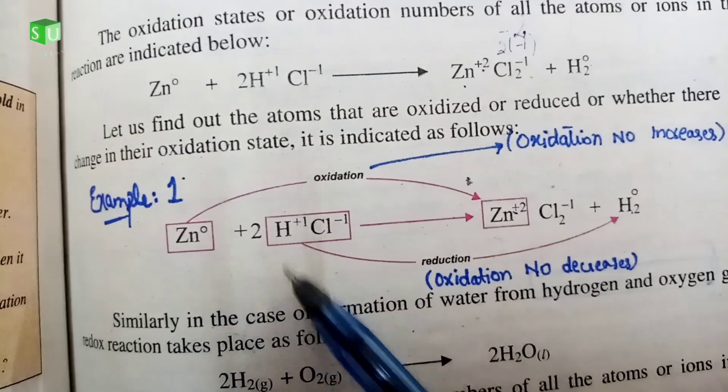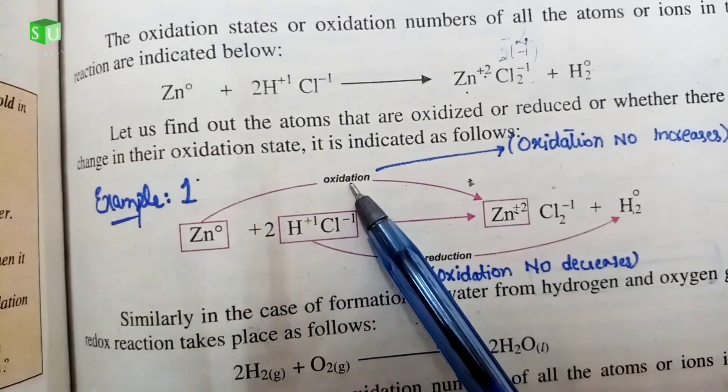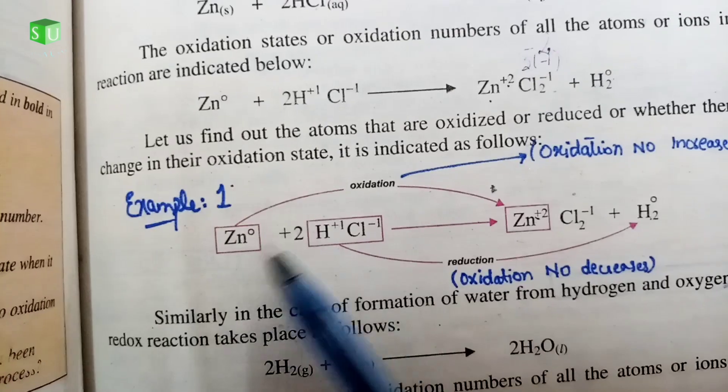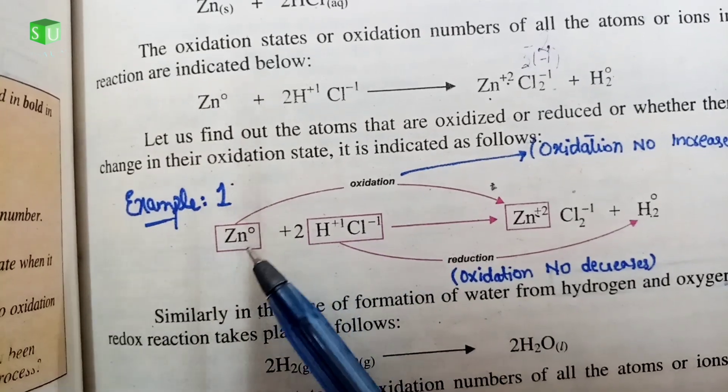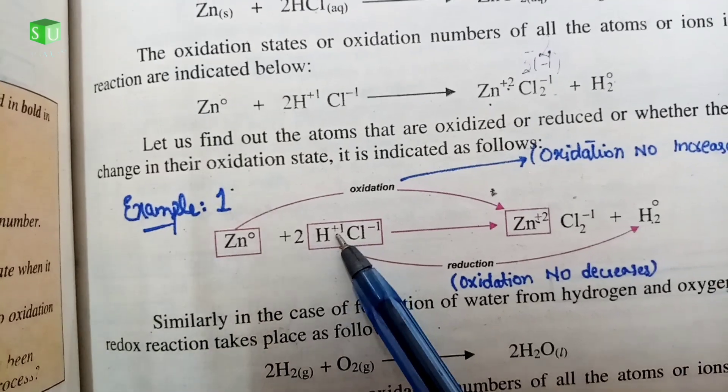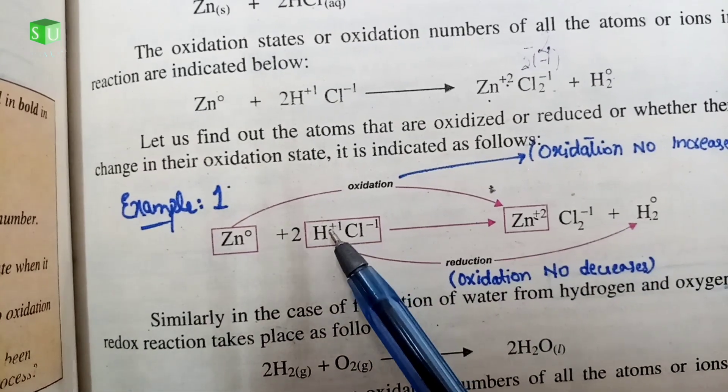Now you can see zinc oxidation state changed from zero to +2, which means oxidation state increased. It has lost 2 electrons. Loss of electron is oxidation. This is oxidized and this becomes the reducing agent. Hydrogen goes from +1 to zero, which means it gained an electron.